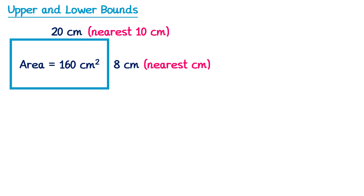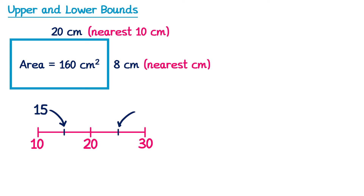To answer this question we're going to write down error intervals for the length and the width. Let's start with the length — that's 20cm. If we draw a number line and put 20 in the middle, this has been rounded to the nearest 10cm, so 10cm below is 10 and 10cm above is 30. The upper and lower bounds will be halfway in between these, so the lower bound is 15 and the upper bound is 25. The error interval for the length is 15 ≤ length < 25.